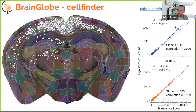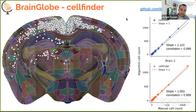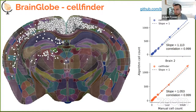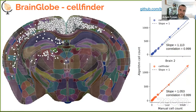In rabies tracing experiments, the absolute number of labeled cells can vary with viral titer and injection volume. What matters is the relative distribution across brain areas. We measured the correlation between CellFinder and expert manual counts, and in both brains we get a correlation of 0.99, confirming that the relative number of cells per brain area from the software matches very well what you would get counting manually.